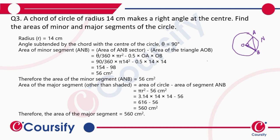This gives us 56 centimeters square for the minor segment. The area of the major segment will be the area of the whole circle minus the area of the minor segment, which is π r² minus 56, giving us 560 centimeters square.